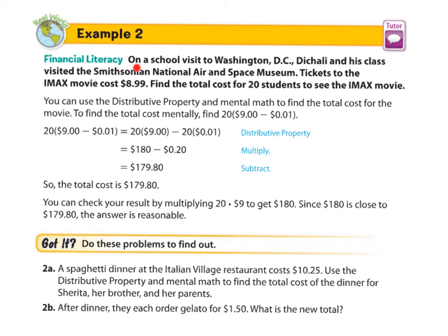Example 2: Financial Literacy. On a school visit to Washington D.C., DiCioli and his class visited the Smithsonian National Air and Space Museum. Tickets to the IMAX movie cost $8.99. Find the total cost for 20 students to see the IMAX movie. You could round this number to $9 and take away a penny for each one — 20 pennies. So 20 times 9 would be 180, and if you take away the 20 pennies, it would be $179.80.